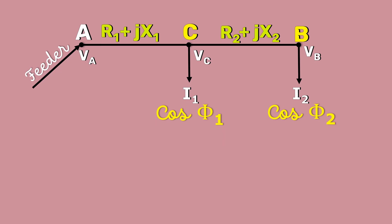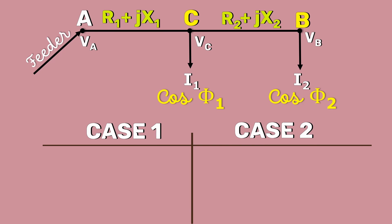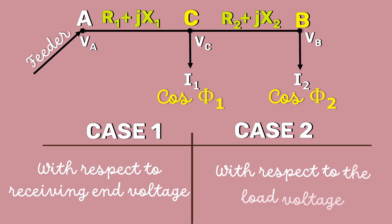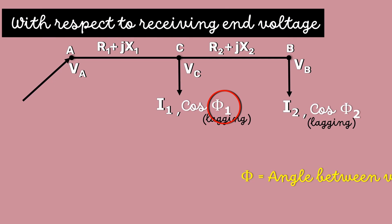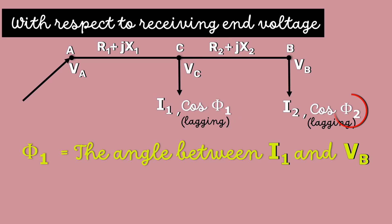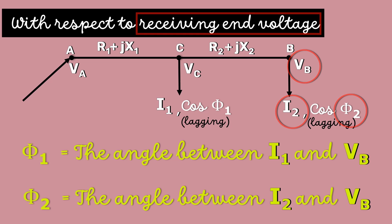There are two ways to represent this power factor. The first one is with respect to the receiving end voltage and the second one is with respect to the load voltage. Let's first discuss the first case. Here, the phi1 is the phase difference between the current I1 and the receiving end voltage VB. Phi2 is the phase difference between the current I2 and the receiving end voltage VB.